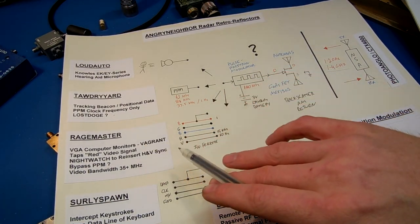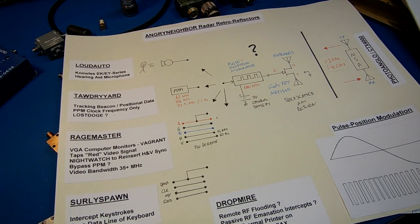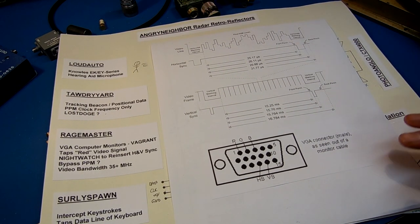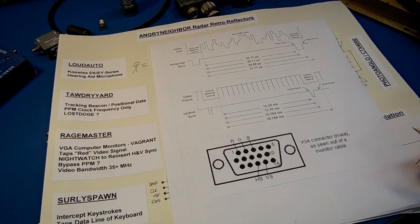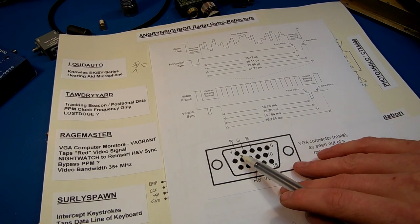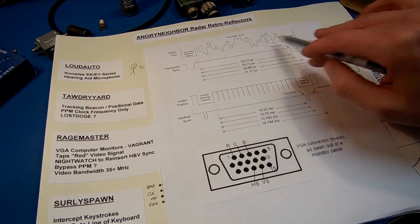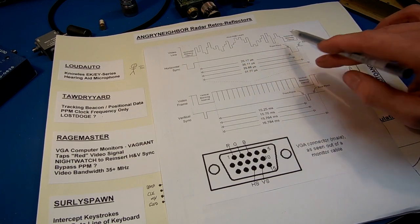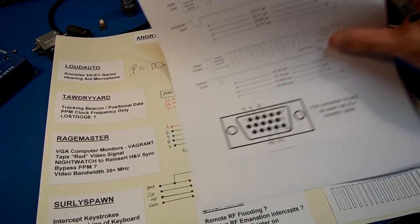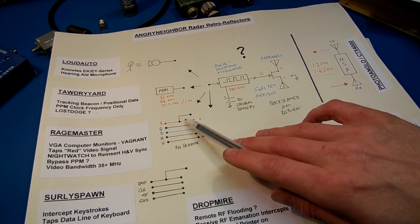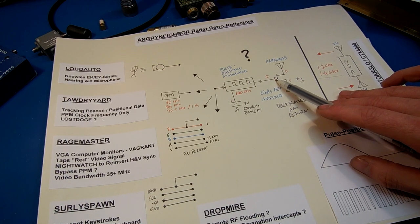The RageMaster unit, or implant, is for targeting VGA, or Super VGA, that series of monitors. Just taps the red line. Because the video signal essentially has its own bias, and it's a very wide band, up to over 30 MHz, I believe they are bypassing the pulse position modulator and just running this red video line straight into the gate of the FET. Because this FET will also act like a mixer.